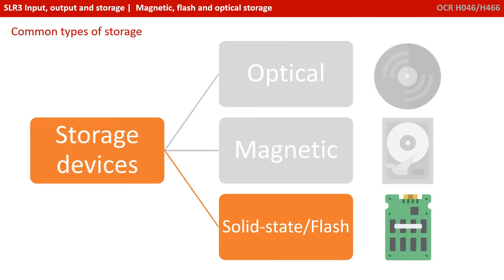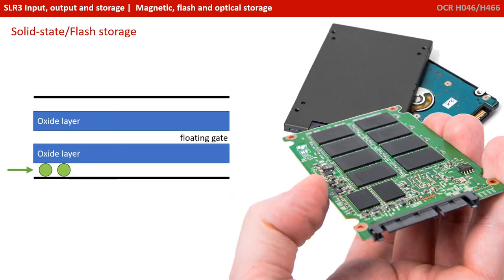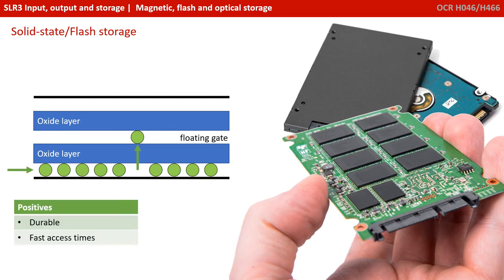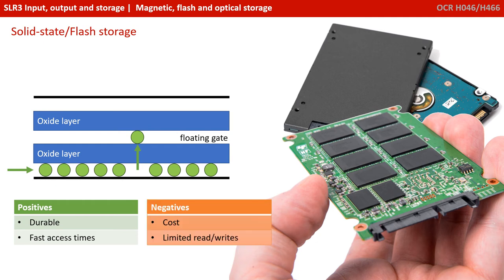Solid-state drives are gaining in popularity, being small, lightweight, and very quick to access data. They also operate without noise. There are many different types of solid-state storage, and they are beginning to replace hard disks as their capacity increases and their cost decreases. Solid-state drives work by a flow of electricity forcing electrons into floating gates between two oxide layers. This causes a change in the charge in the floating gate, which can be measured as a zero or a one. Over time, the oxide layers deteriorate, meaning that eventually the transfer of electrons will become unreliable. This means that solid-state media has a limited number of read-write cycles and therefore a limited lifespan.